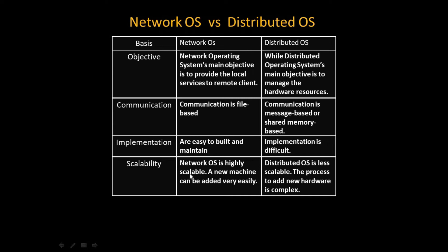Under scalability: a network operating system is highly scalable because a new machine can be added very easily. On the other hand, a distributed operating system is less scalable because the process of adding new hardware is more complex and slower, making it less scalable overall.